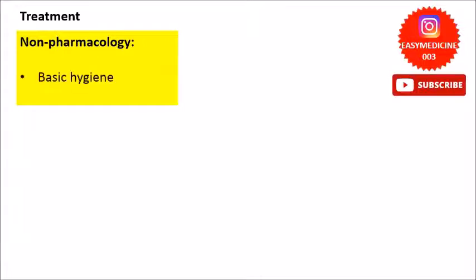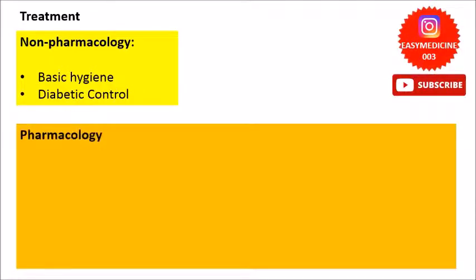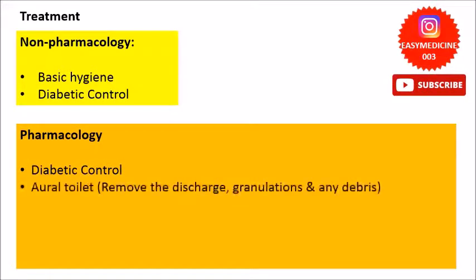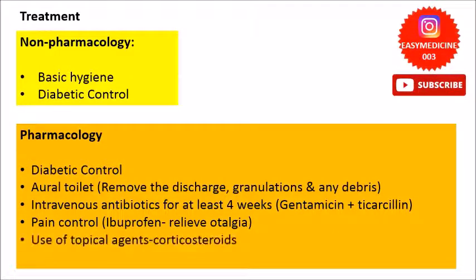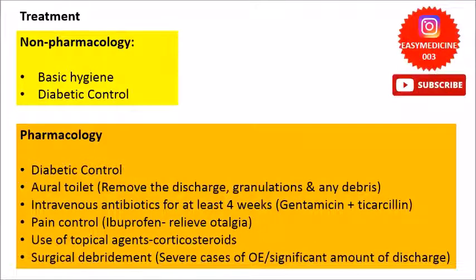For treatment, we shall start with non-pharmacological measures to ensure better healing and prevent recurrent infection — basic hygiene is needed. For diabetes, we can advise lifestyle changes including diet and exercise. For pharmacological treatment, proper diabetic medication and follow-up is needed. For the ear, aural toilet and IV antibiotics for four weeks with gentamicin and ticarcillin are needed. We can prescribe ibuprofen for pain relief and topical corticosteroids to reduce inflammation. In severe cases, surgical intervention can be considered.